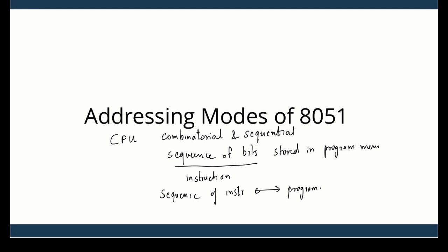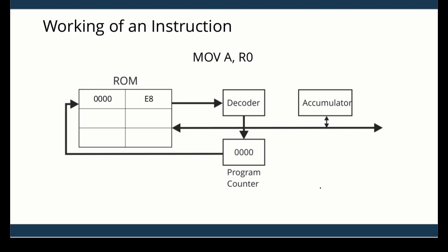Now let us look at one of the simple instructions: MOV A, R0. This instruction MOV A, R0 is stored in program memory. The program memory is generally always a read-only memory. In the program memory, starting at address 00000, we have stored a number. This is a sequence of bits which will tell the 8051 to do something. Here it is a verb, and this verb has a special name called an opcode.